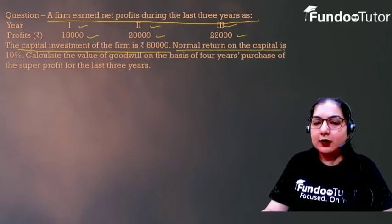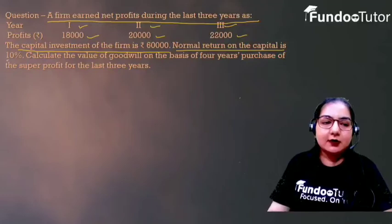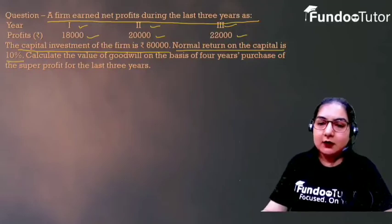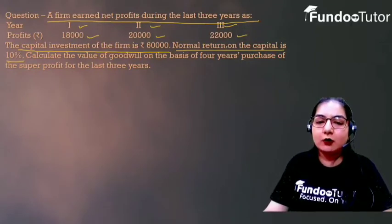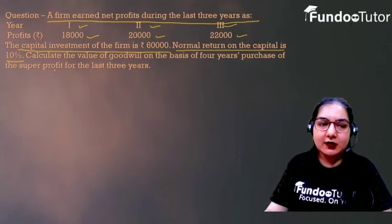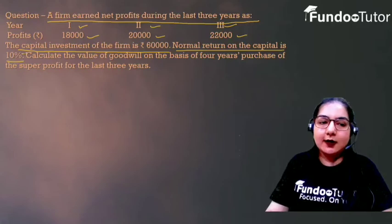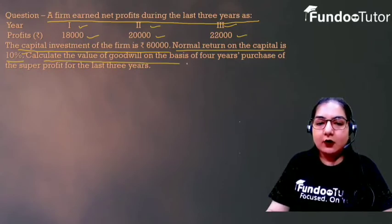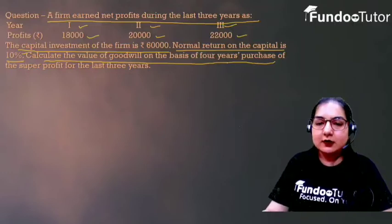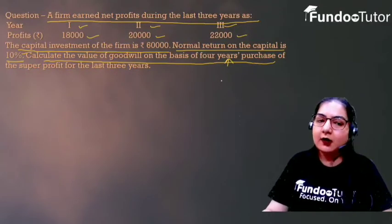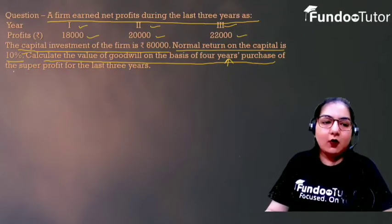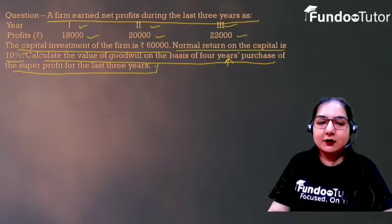The normal return on capital is 10%, meaning the normal rate of profit is 10%. We need to calculate the value of goodwill on the basis of 4 years of purchase of the super profit for the last three years.